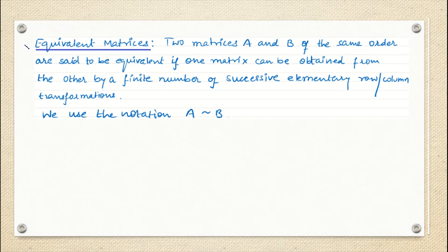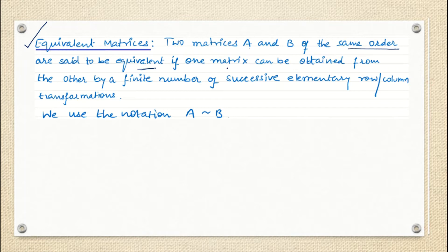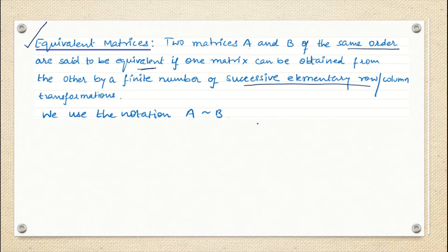The very important term is equivalent matrix. Two matrices A and B, both of the same order or same dimension, are said to be equivalent if one matrix can be obtained from the other by a finite number of successive elementary row or elementary column transformations. So if you start with any matrix A and perform any number of elementary row or column operations, the new arrangement formed at each step is called an equivalent matrix.